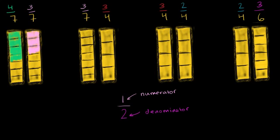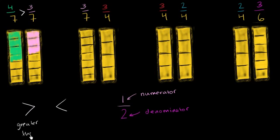The way we can state that comparison mathematically is with the greater than symbol: 4 sevenths is greater than 3 sevenths. Now the greater than and less than symbols can sometimes be confusing. This is greater than, and this is less than.